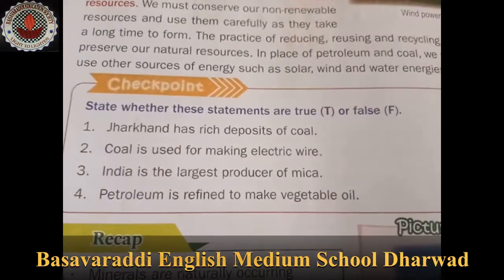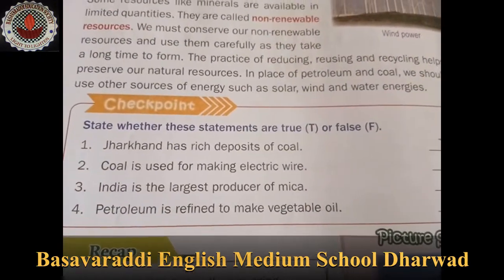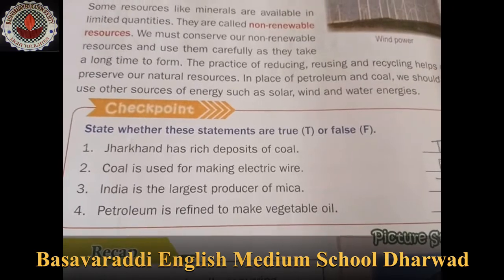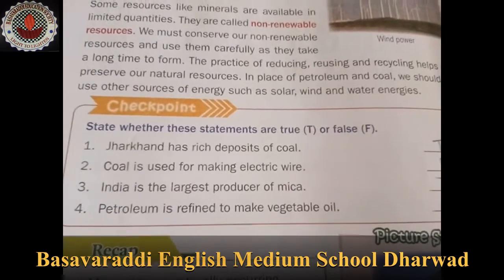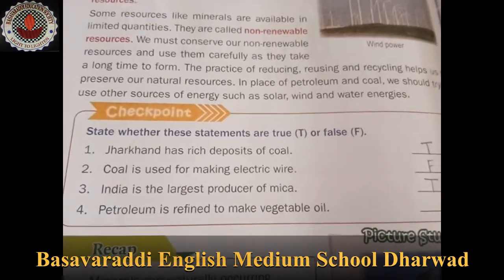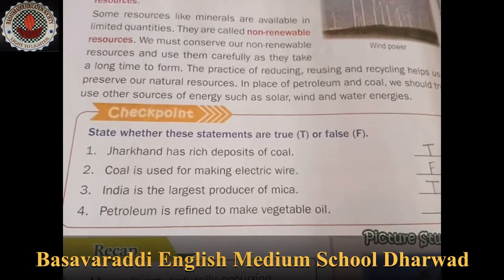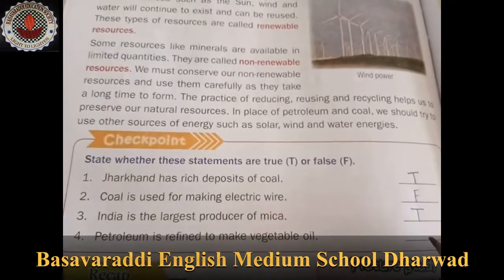Fourth question: Petroleum is refined to make vegetable oil. That is false.